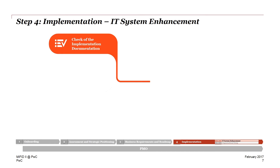At first you need to check the implementation documentation from a business point of view and then track and monitor the timelines, which should be agreed with your IT department or provider. Most times IT changes cannot be implemented all at once, and IT departments have to consider change intervals varying from executions done monthly, quarterly, or semi-annually. Therefore, it is very important to develop a timeline for implementing all your business requirements until the implementation period is over in January 2018.